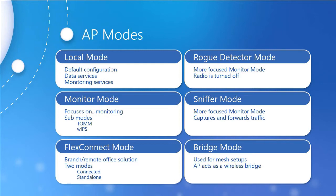Monitor mode focuses the capabilities on monitoring, hence the name. Within this, we have two sub-modes. One is known as the tracking optimized monitor mode, or TOM, which is optimized for RFID tracking. Then there's the wireless intrusion prevention system, which has a fixed scan time of 250 milliseconds per channel. Monitor mode is also useful for troubleshooting the basic functionality of your wireless LAN.